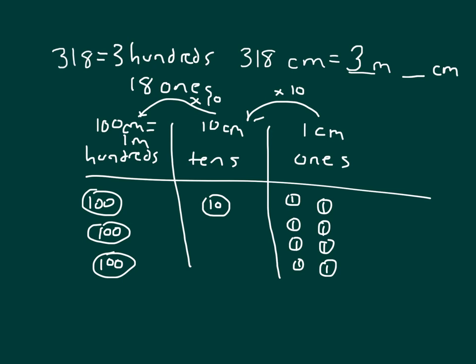So we have three meters, along with 18 ones — which are also centimeters — giving us three meters and 18 centimeters. This problem and the place value problem look very similar because the metric system is related to the place value system in that it is base ten, where each value is ten times more than the other.